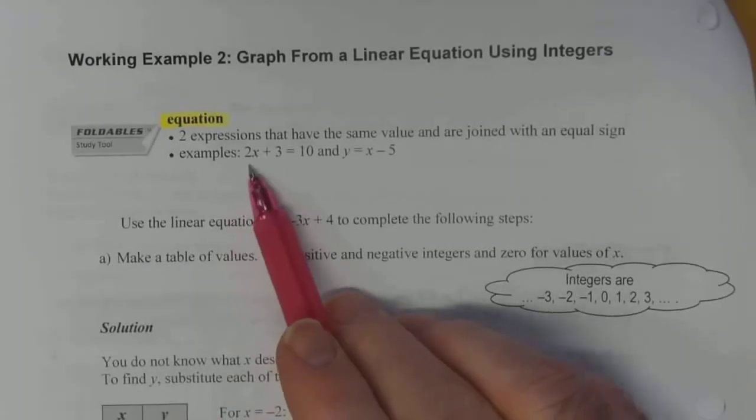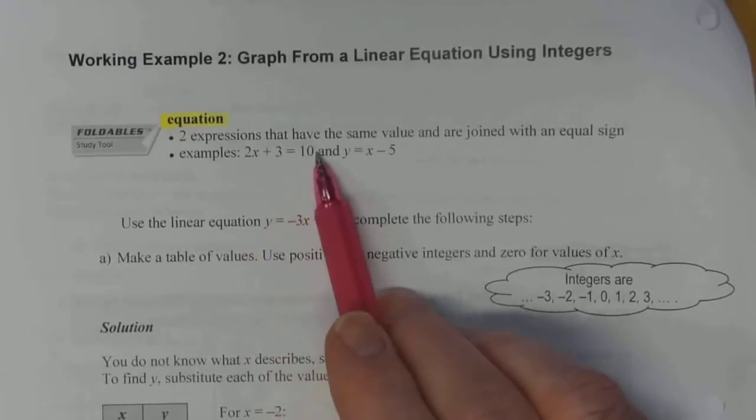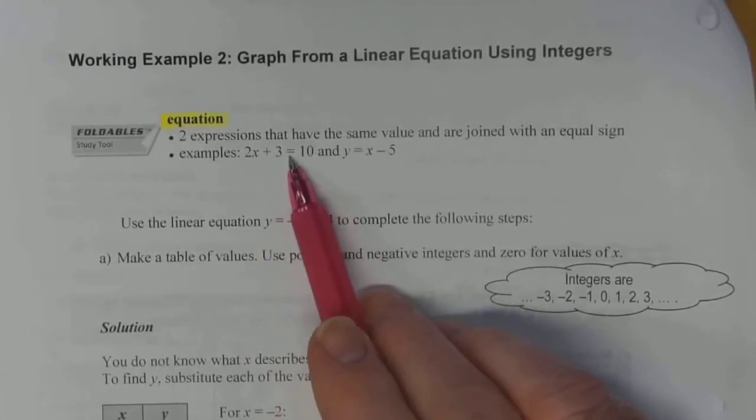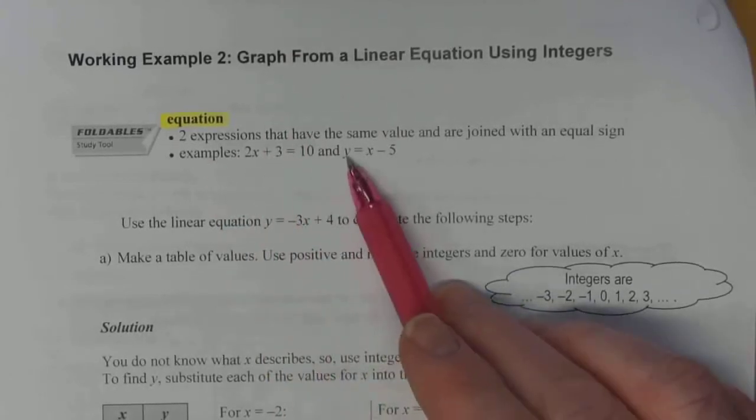For example, 2x plus 3, that's an expression. 10 is also an expression and they're joined by an equal sign. That's one example. Another one here,